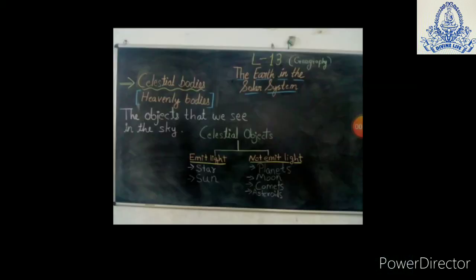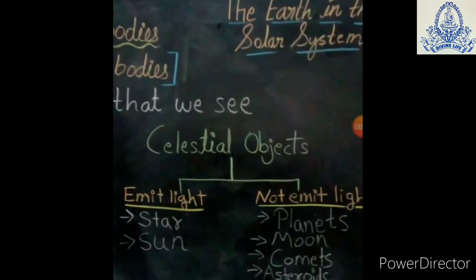Celestial bodies, also known as heavenly bodies or astronomical objects, are those objects that we see in the sky. They are of two types: those that emit light and those that do not. Stars and the sun produce their own light. Planets, the moon, comets, and asteroids do not produce light — they just reflect light.